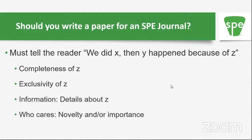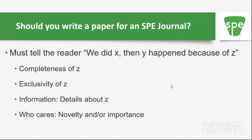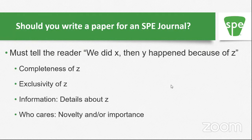When I say completeness of Z, I mean: did you look at all the other possible things that could explain why Y happened? Have you measured all the things needed, and are they all consistent with your explanation? Exclusivity of Z — is it the only explanation? And what details do you have that this is what's actually happening? Sometimes you're not sure your explanation is correct, and that's usually okay. But you have to have some idea of why. Just saying we did X and then Y happened is not enough to get published.